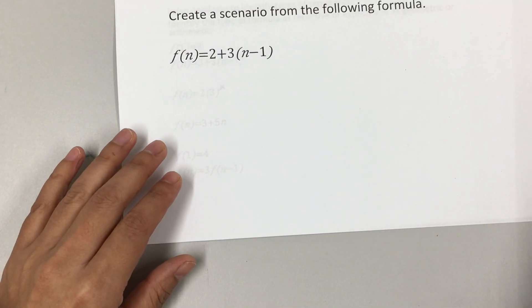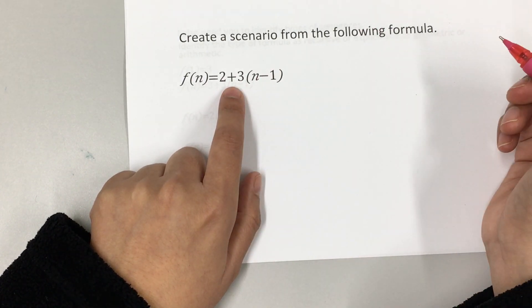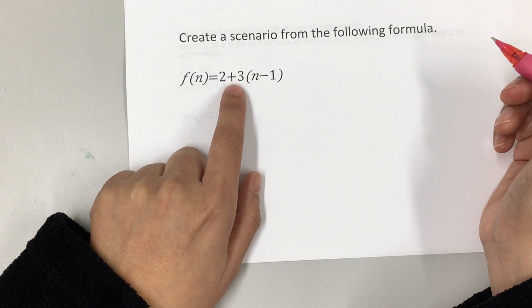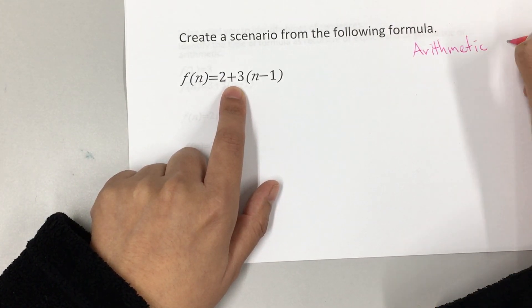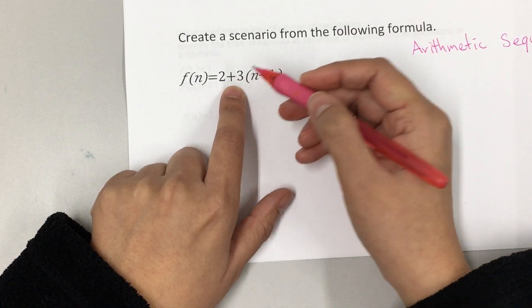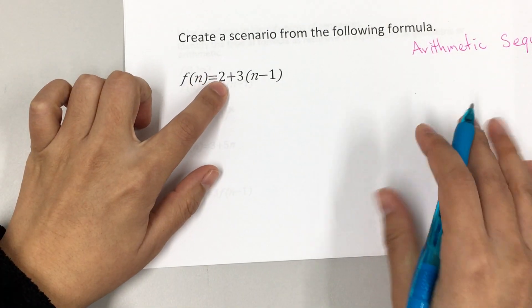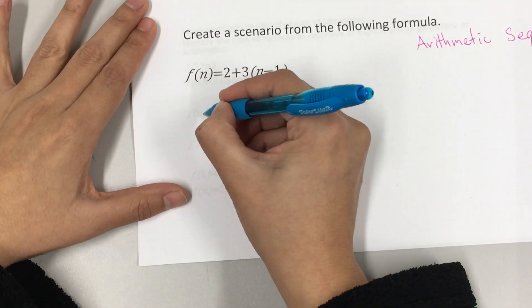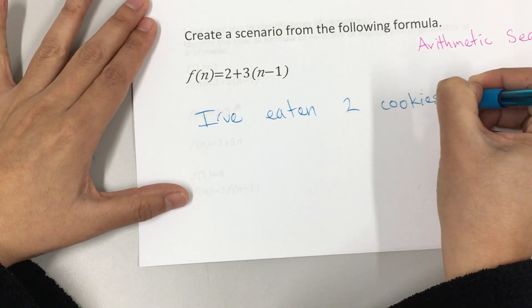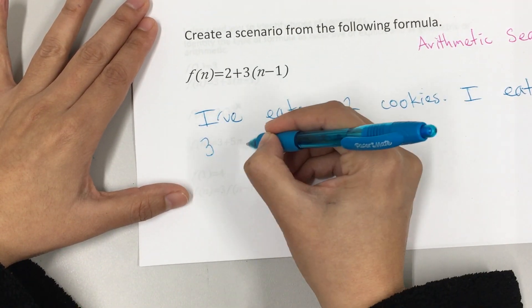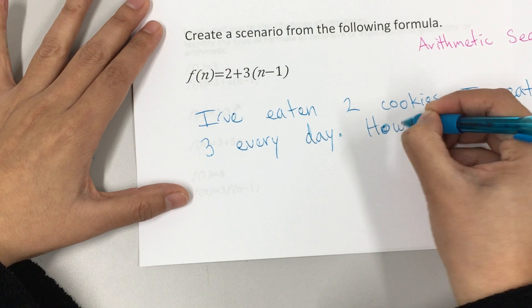What about another formula? Now we're adding, so what type of sequence is this? When we're adding, it's called an arithmetic sequence. A scenario could be: I have eaten two cookies; I eat three every day. How many cookies will I have eaten by the 15th day?